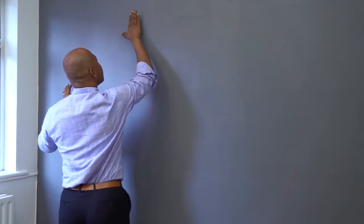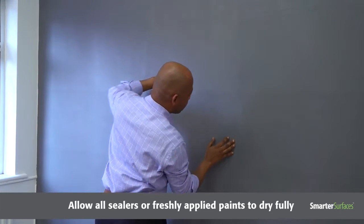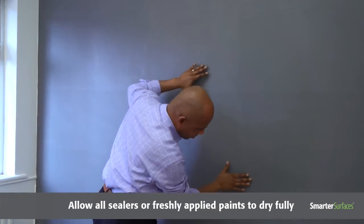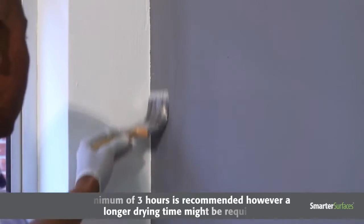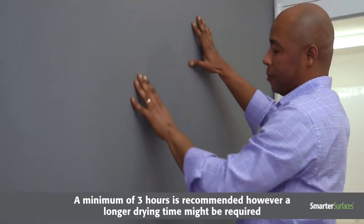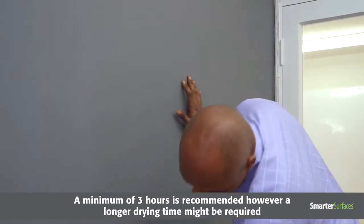Ensure you allow all sealers or freshly applied paints to dry fully before applying SmartWall Paint. A minimum of 3 hours is recommended. However, a longer drying time might be required depending on the local conditions.